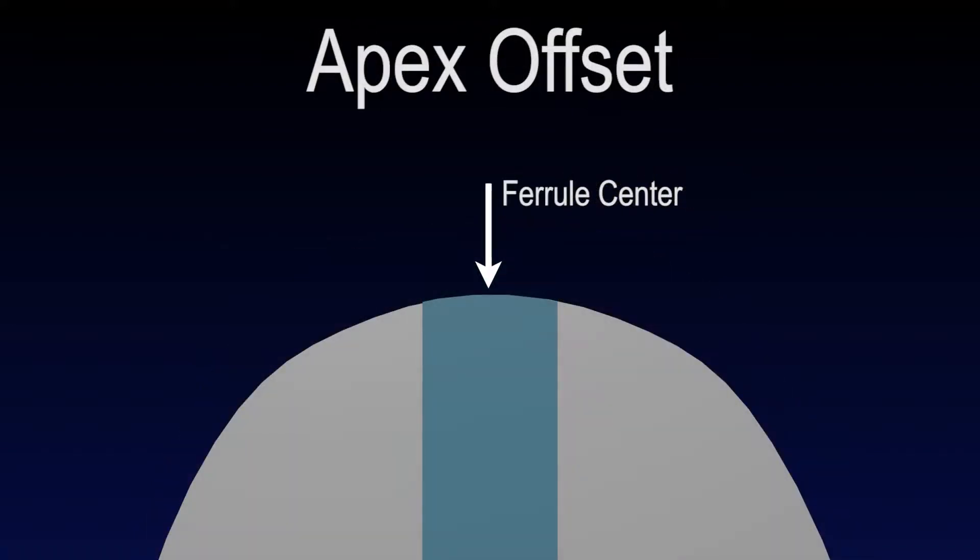Apex offset is a measure of the distance between the center of the convex curve of the polished ferrule end-face and the center of the fiber. The center of the fiber should be the highest point on the end-face to ensure contact between mating fibers.